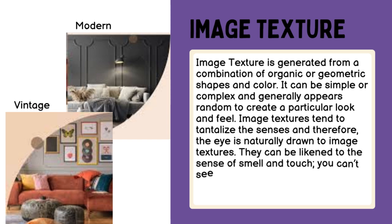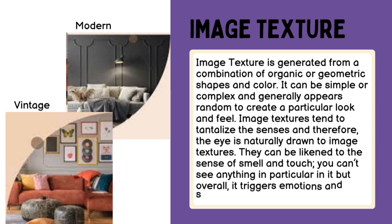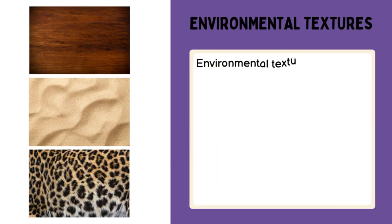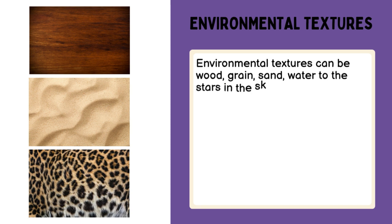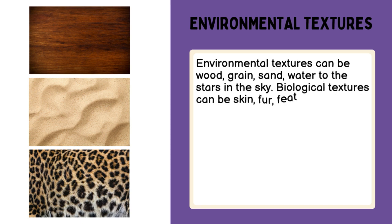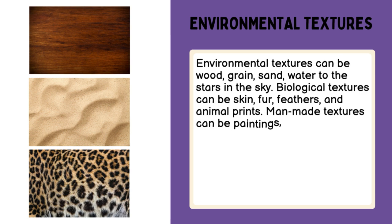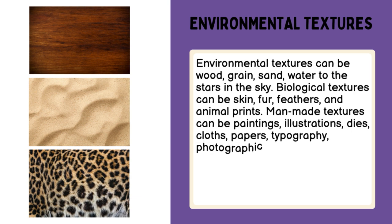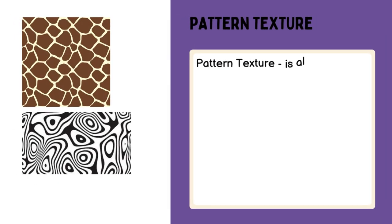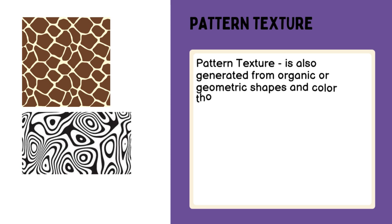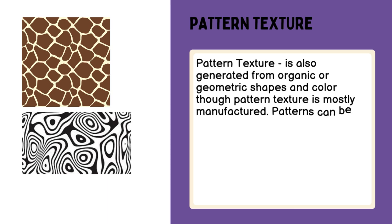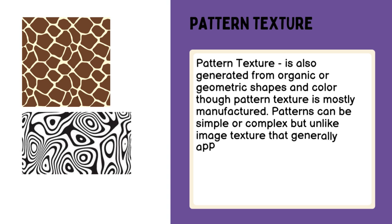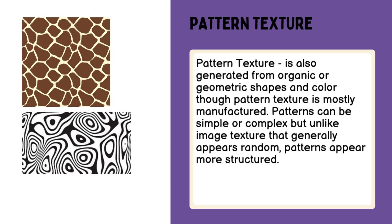Image textures can be likened to the sense of smell and touch — you can't see anything in particular in it, but overall it triggers emotions and sensations of touch. Environmental textures can be wood, rain, sand, water, or the stars in the sky. Biological textures can be skin, fur, feathers, and animal prints. Man-made textures can be paintings, illustrations, dyes, cloths, papers, typography, photographic effects, etc. Pattern texture is also generated from organic or geometric shapes and color, though pattern texture is mostly manufactured. Patterns can be simple or complex, but unlike image texture that generally appears random, patterns appear more structured.